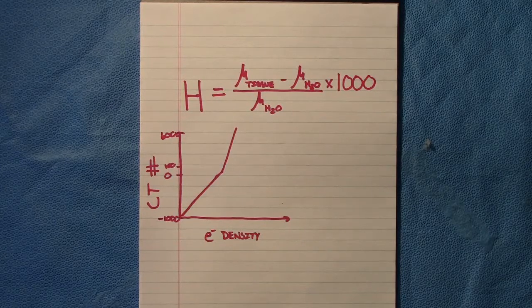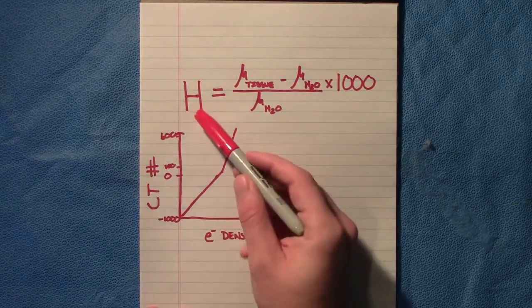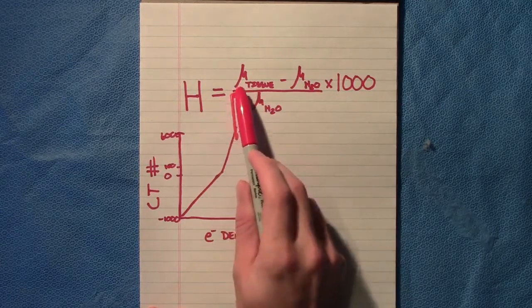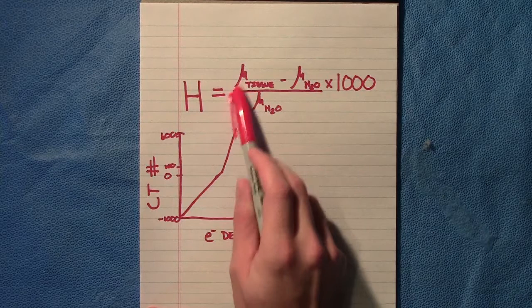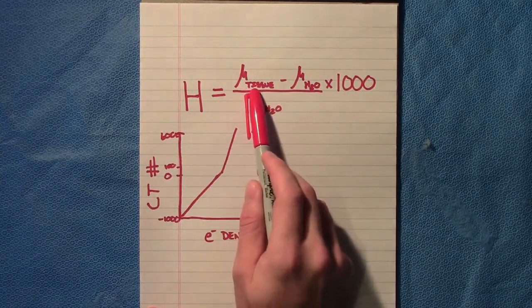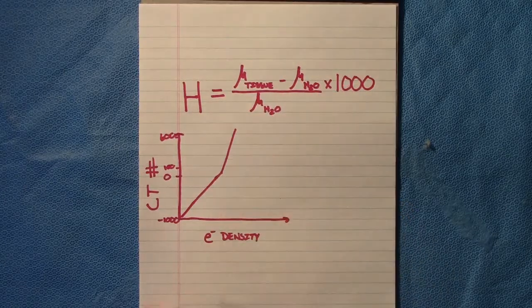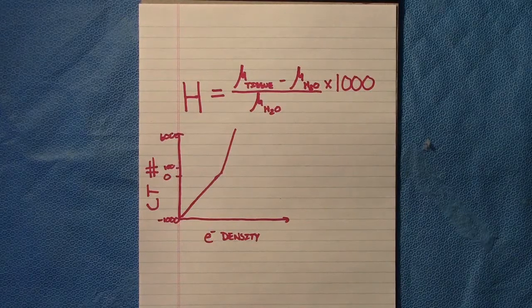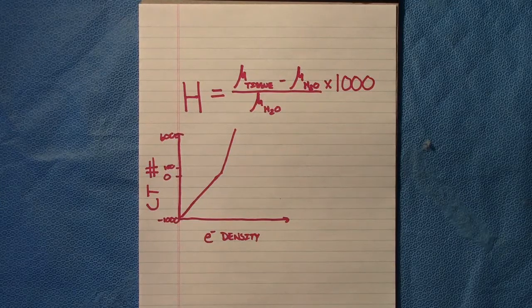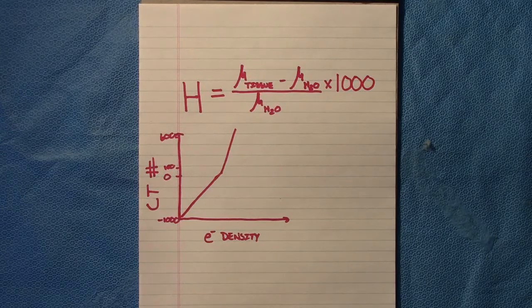A Hounsfield unit is calculated by taking the linear attenuation coefficient, that's this μ (mu), of the tissue in question minus that of water, divided by water, times 1000. So one Hounsfield unit means that if a typical Hounsfield unit for water is zero, if you have a Hounsfield unit of one, that means there's a change of 0.1 percent.